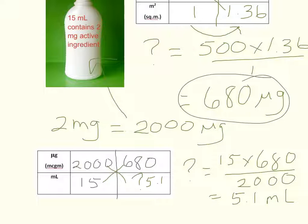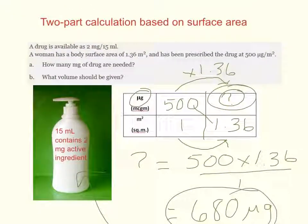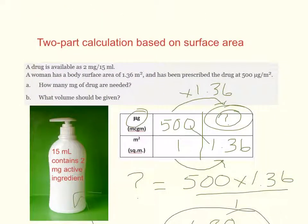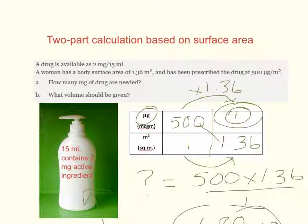So we've got 5.1 milliliters to spread over that 1.36 square meters of body surface area skin.